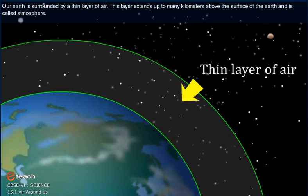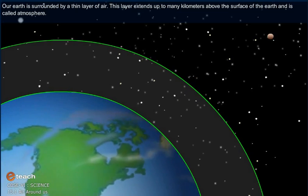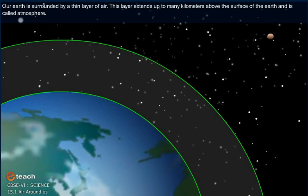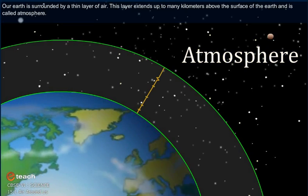Our earth is surrounded by a thin layer of air. This layer extends up to many kilometers above the surface of the earth and is called atmosphere.